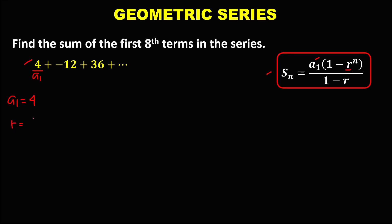and we can solve R using A sub 2 over A sub 1. A sub 2 is the second term, so we have negative 12 over A sub 1 which is 4. Negative 12 divided by 4 equals negative 3, so R equals negative 3. Then we have N, the number of terms, and since we're looking for the sum of the first 8 terms, N equals 8.